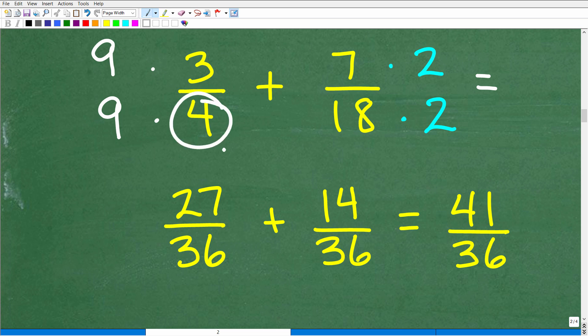So how do I go from a 4 to a 36? Well, I can go from a 4 to a 36 by multiplying that 4 by 9. So 9 times 4 is 36. But if I multiply the denominator by 9, I also got to multiply the numerator by 9. So that's going to be 9 times 3 is 27. So the fraction 3/4 is equivalent to this fraction 27/36.